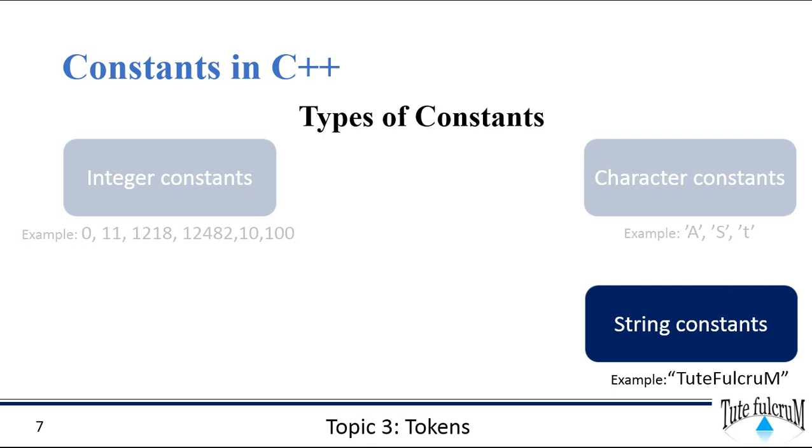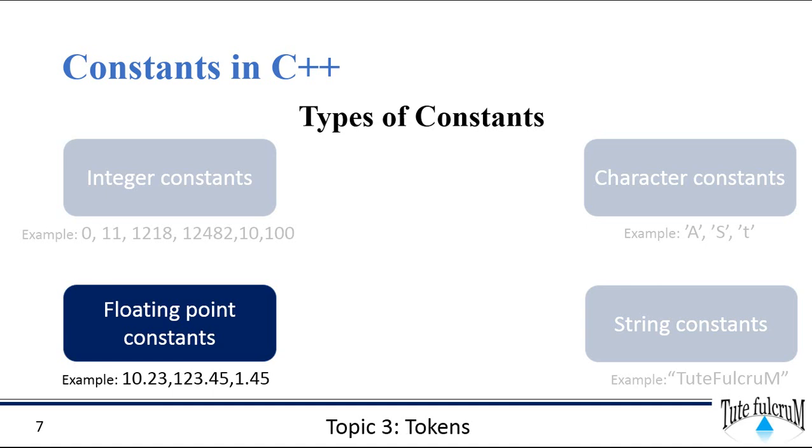String constants. When you have a group of letters that is enclosed within double quotes, they are referred to as string constants. Floating point constants. The floating values or the details with decimal values are referred to as floating point constants, like 10.23, 123.45, etc.